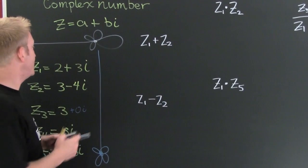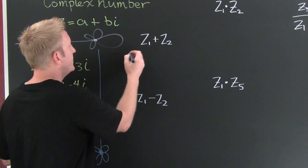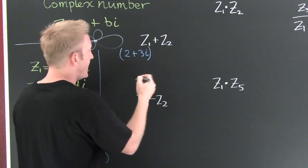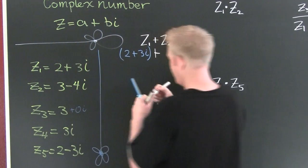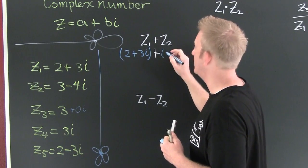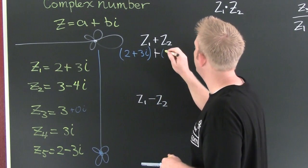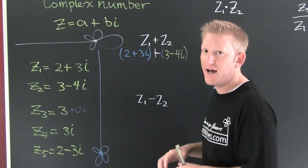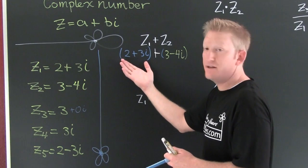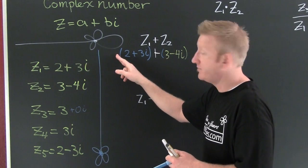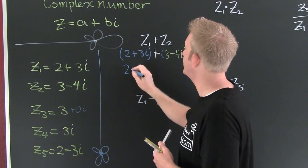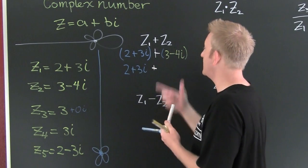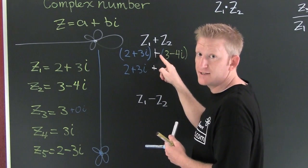First, I want to add z1 and z2. This is 2 plus 3i, and I'm going to add it to 3 minus 4i. I'm adding z1 and z2. These parentheses are unnecessary. There's no number in front and no minus sign in front, so we have 2 plus 3i plus 3 minus 4i.